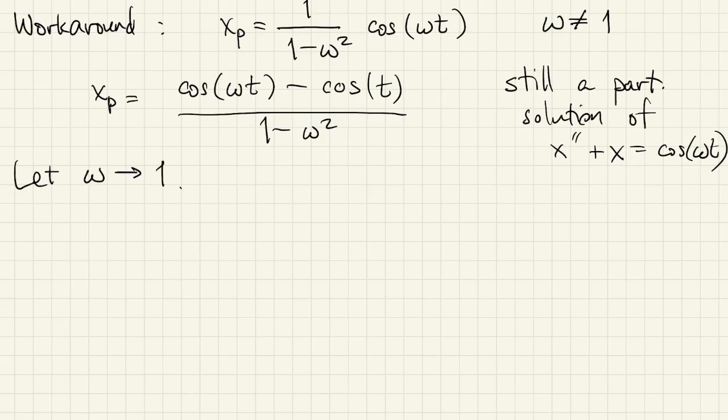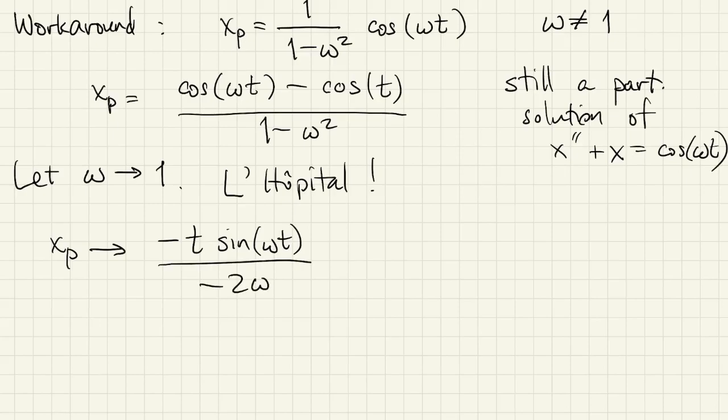Now, I'm going to take a limit as omega goes to one. And if you look at this, you realize it's zero over zero, so we can use L'Hospital's rule. When you do that, remember that the variable in the limit is omega, not t. So you take the derivative with respect to omega in the numerator and in the denominator. Let omega go to one. And then we just get one half t sine t.